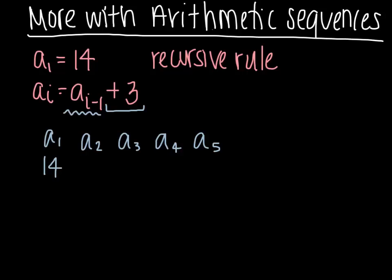So if I want a sub 2, I'm going to take a sub 1 and add 3, and I'll get 17. If I want a sub 3, then I'll take a sub 2, add 3 to it, and that gives me 20. 23, 26, and so on.